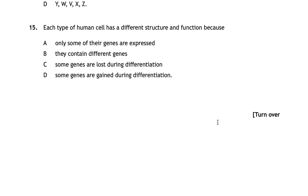For question fifteen, each type of human cell has a different structure and function because: A — only some of their genes are expressed; B — they contain different genes; C — some genes are lost during differentiation; D — some genes are gained during differentiation. The correct answer is A. Different cells express certain genes to produce proteins characteristic for that cell type. Although all cells contain all genes, only some of those genes are expressed, giving each cell a specific structure and specialised function.